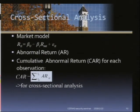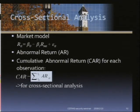We then accumulate abnormal returns across the event window — the period we want to study. The date on which the information breach is announced by the media is called day zero. For event studies, we typically capture stock price reactions from day minus one to day zero or day plus one. We go back one day before because there might be some information leakage — the press might know the information one day before they actually publish it.